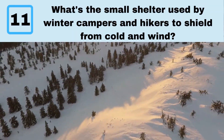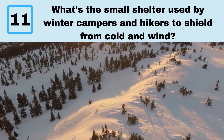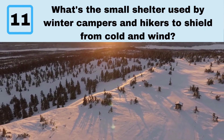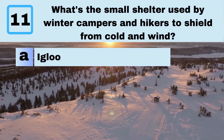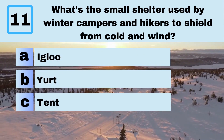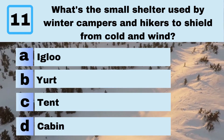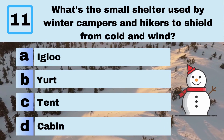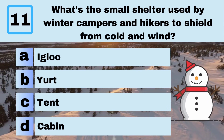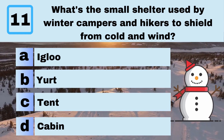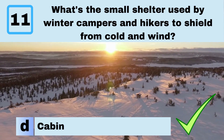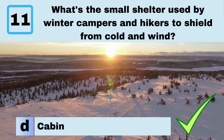Question 11. What's the small shelter used by winter campers and hikers to shield from cold and wind? A. Igloo. B. Yurt. C. Tent. D. Cabin. Answer: D. Cabin.